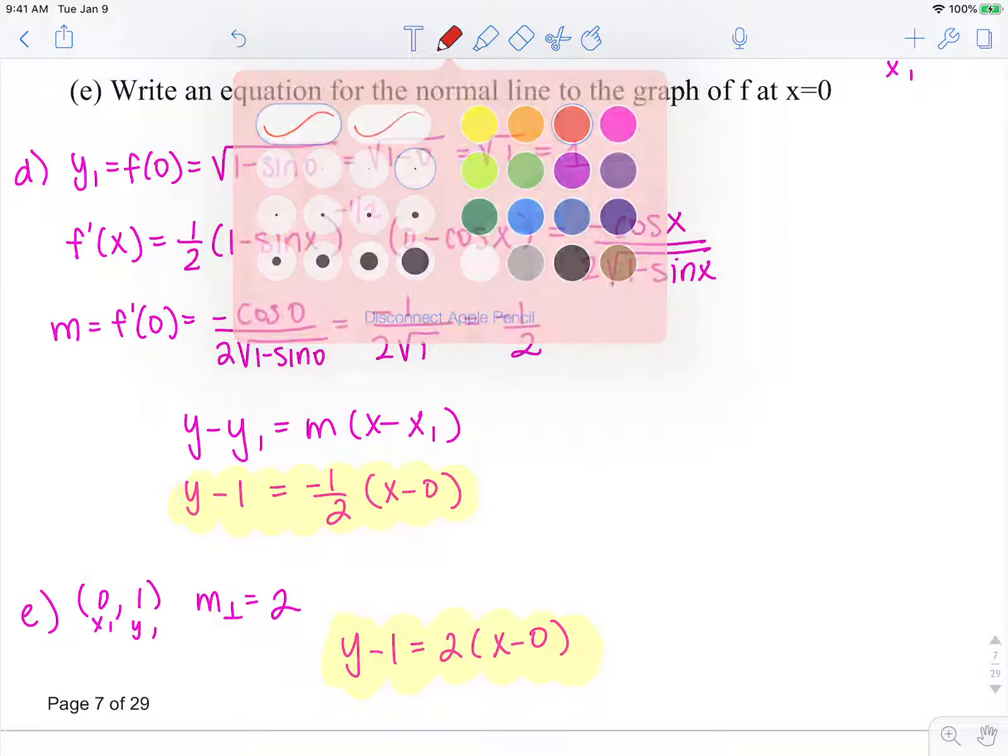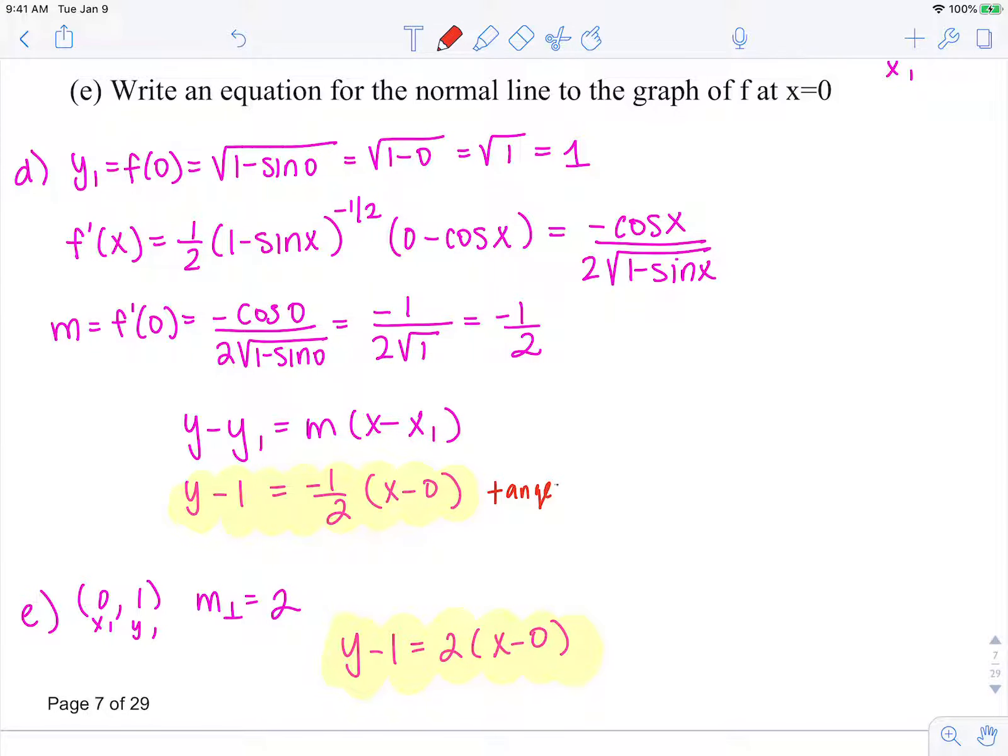Let's just note this is the tangent line and this is the normal line, which is perpendicular to our tangent line.